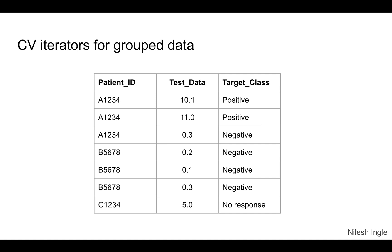Moving on to another layer on how the folds are created is looking at grouped data. So far, what we have looked at is just the target class. But what if the data has groups as well? How do we split the data based on groups? One example is that we have the target class which is positive, negative, or no response — the output for a particular test for a patient. One patient can go through a number of different types of tests. This can be a separate group, such as a treatment control group.